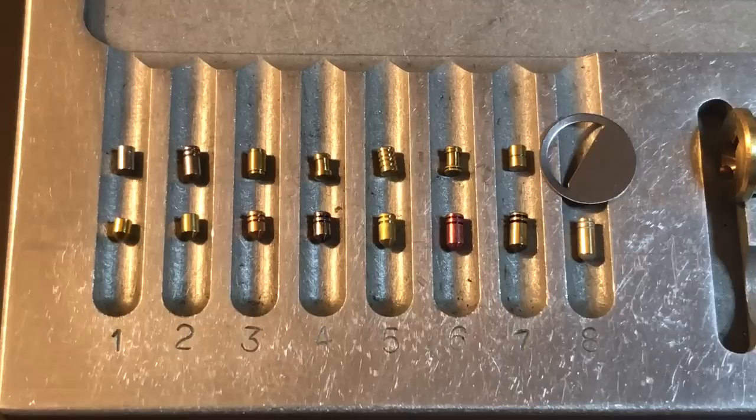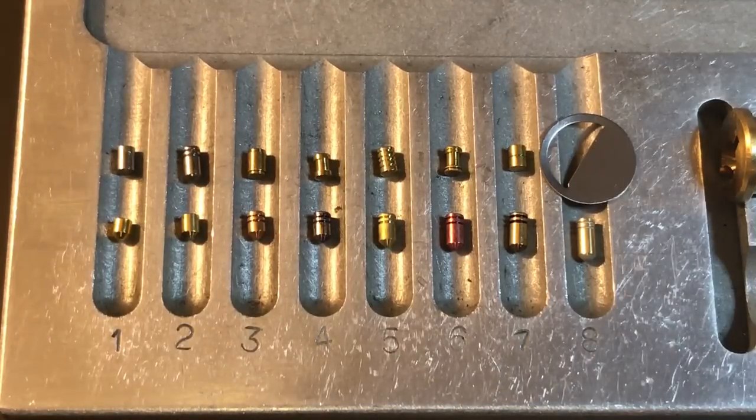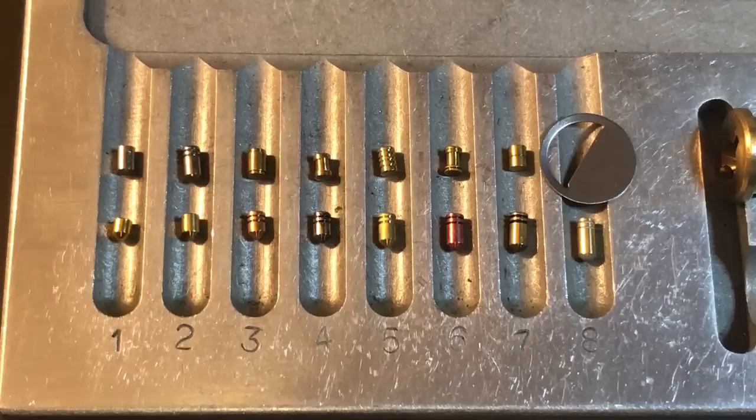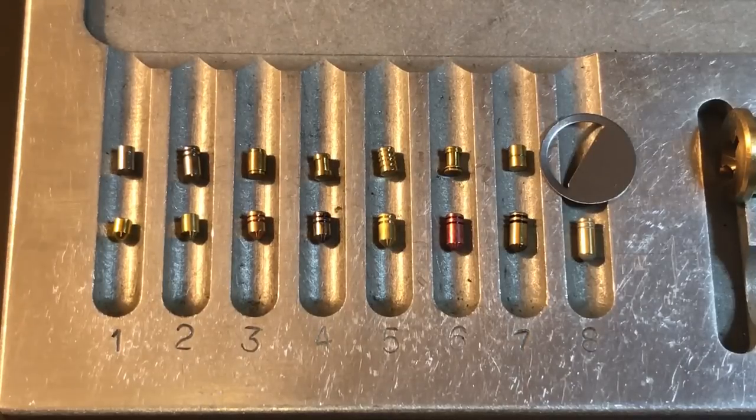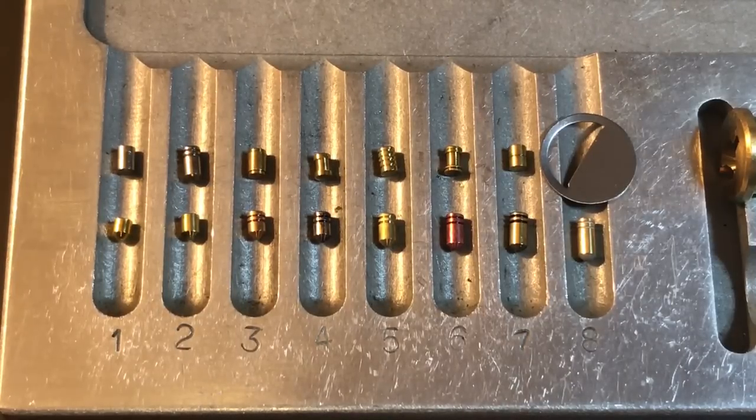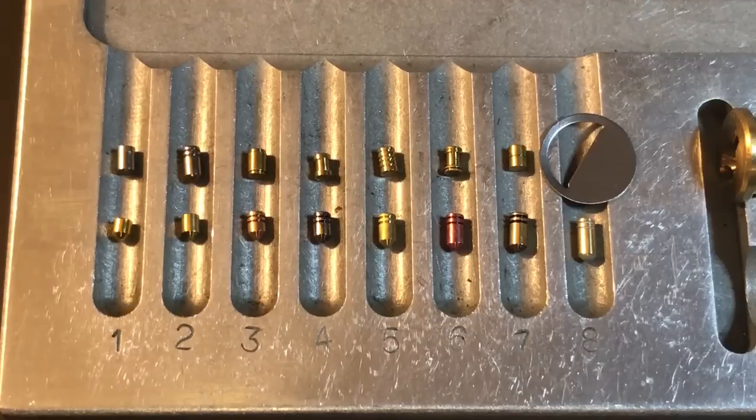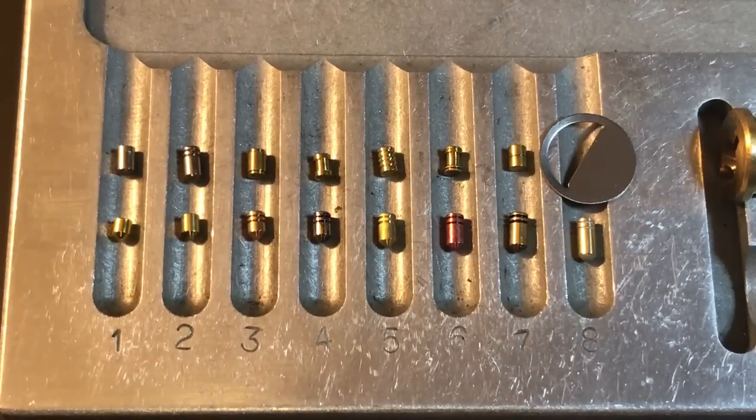That's because 1 and 2 are so small that there's no chance for a serration to come into play. So in our current grading system they would not be given a point for being a security pin whereas cuts 3 through 8 would be given a point. Unfortunately what that does is penalize locks for their bidding and I don't think that's right.